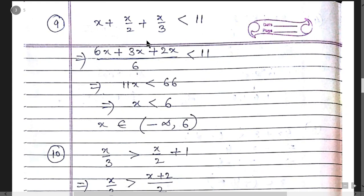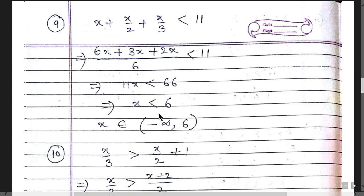Question 9: Solve by taking LCM. Combining gives (6x + 3x + 2x)/6, and 6 multiplied by 11 gives 66, so 11x < 66, meaning x < 6. The answer is (-∞, 6) — an open bracket since the equality sign is not present.